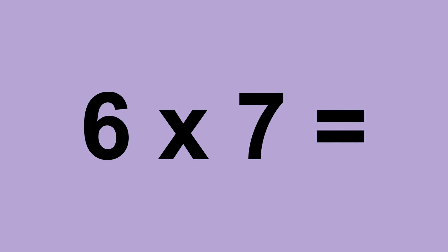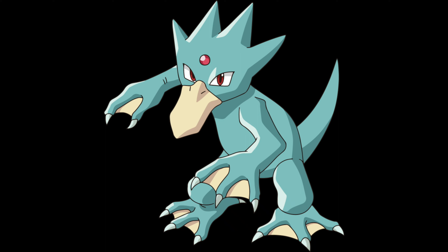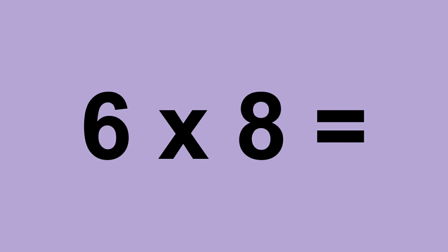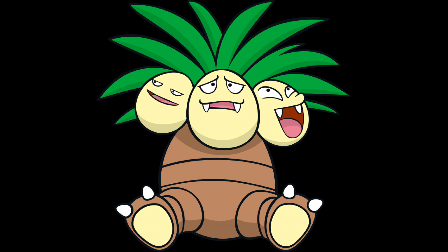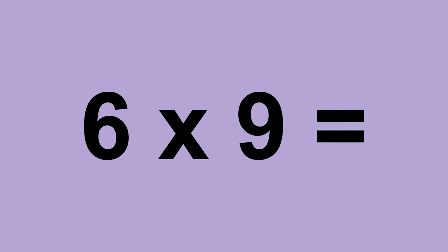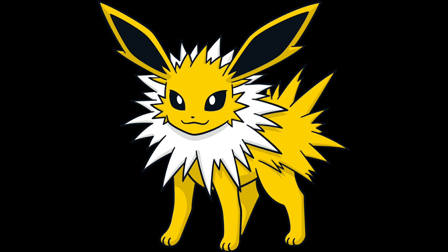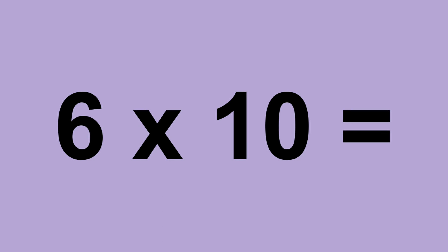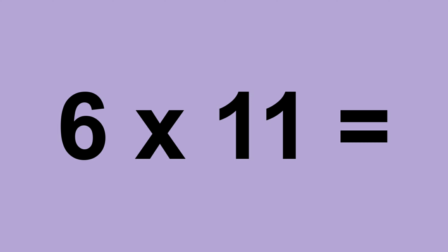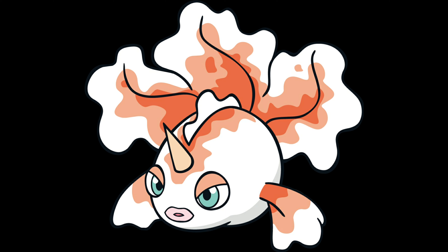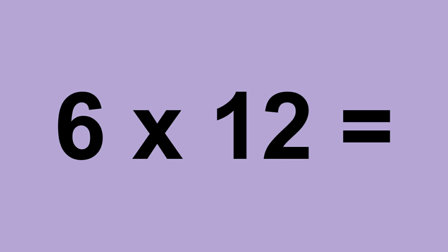Six times seven equals forty-two. Six times eight equals forty-eight. Six times nine equals fifty-four. Six times ten equals sixty. Six times eleven equals sixty-six. Six times twelve equals seventy-two.